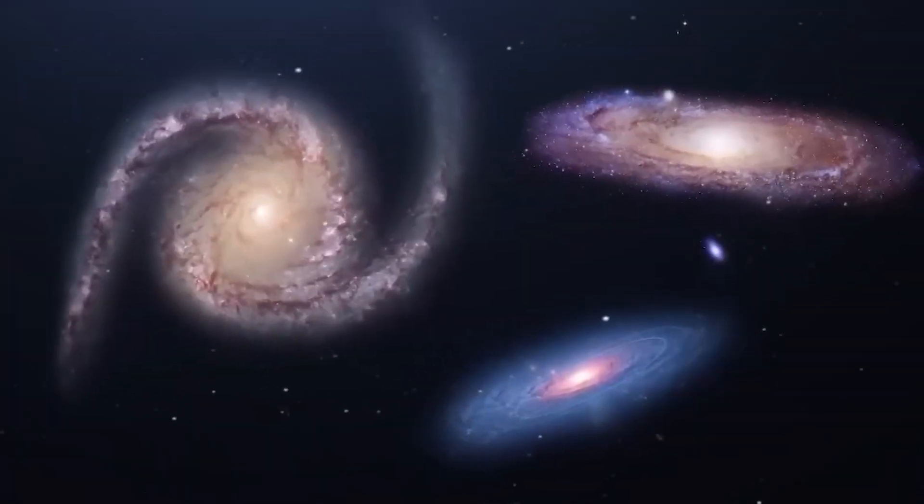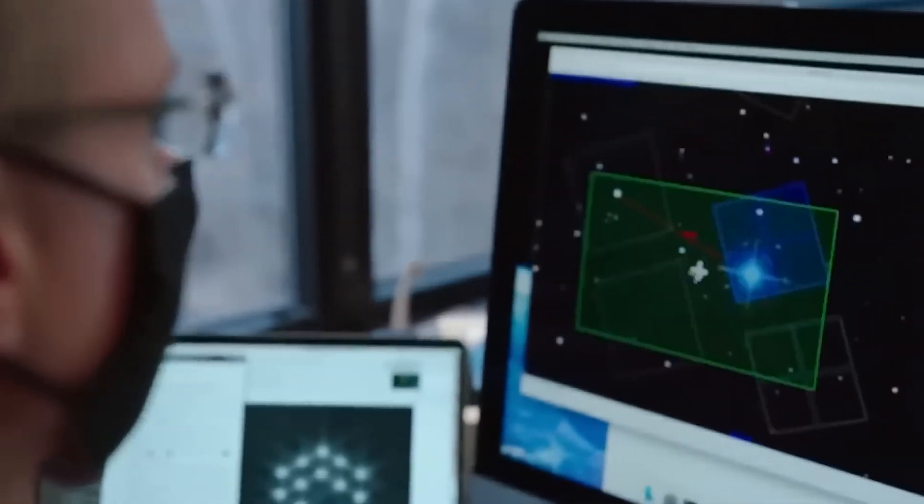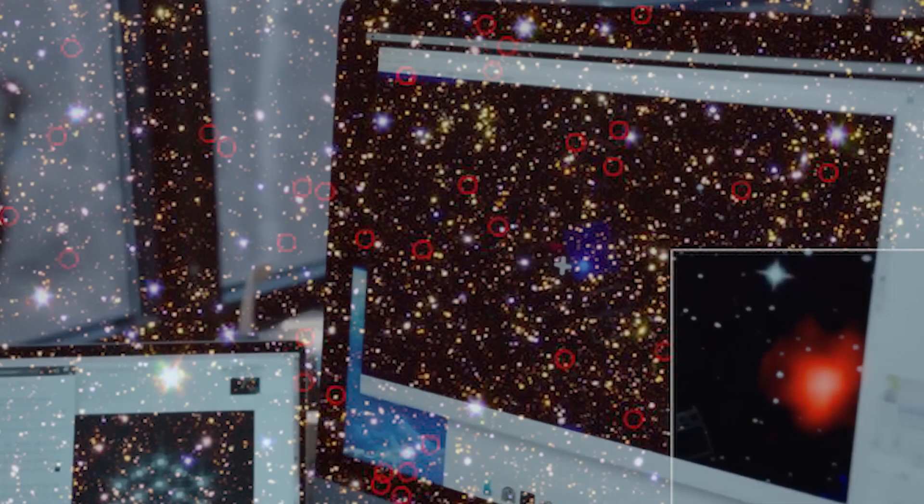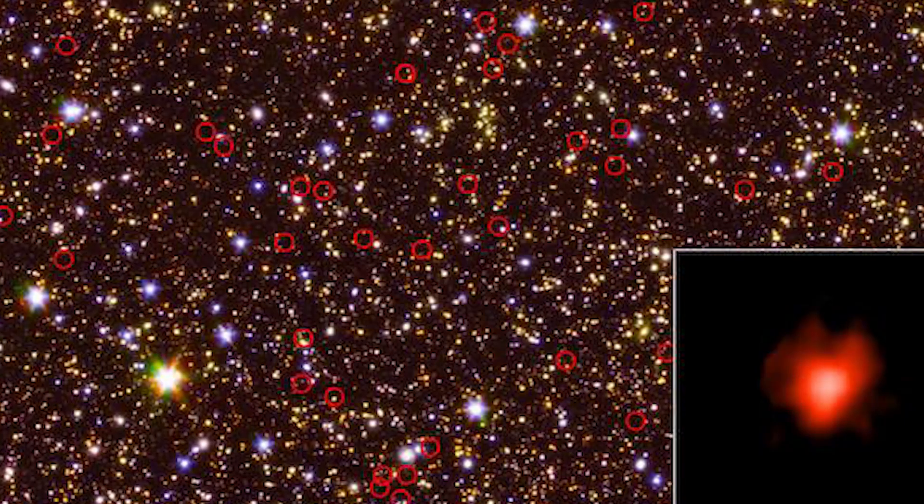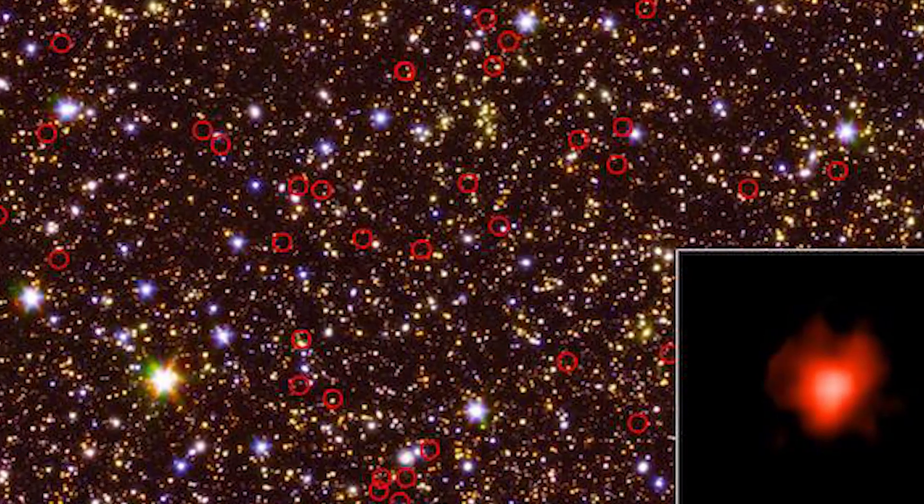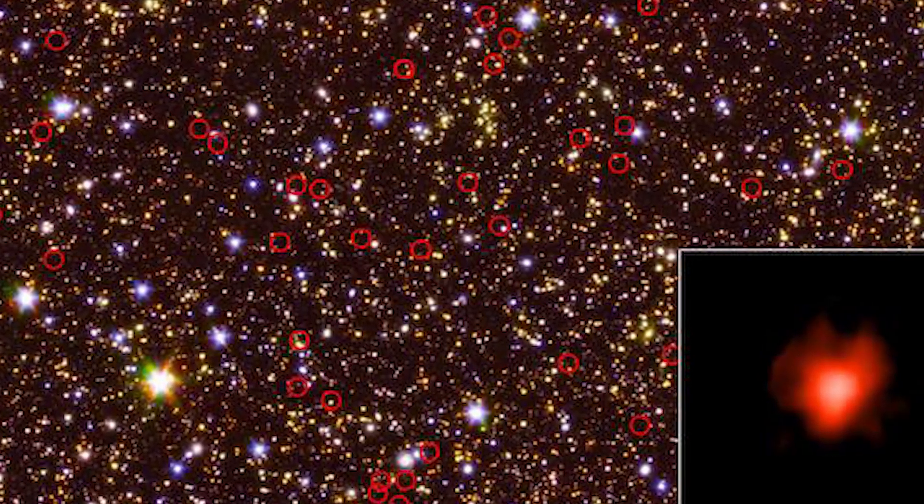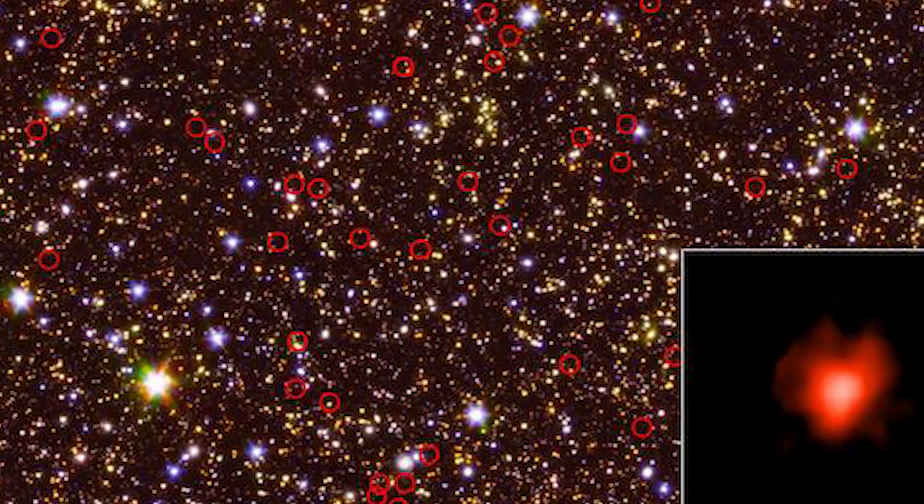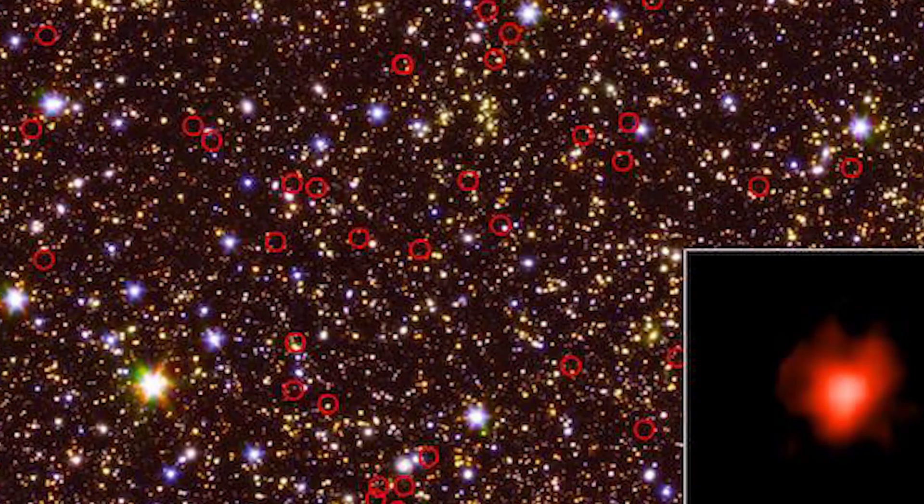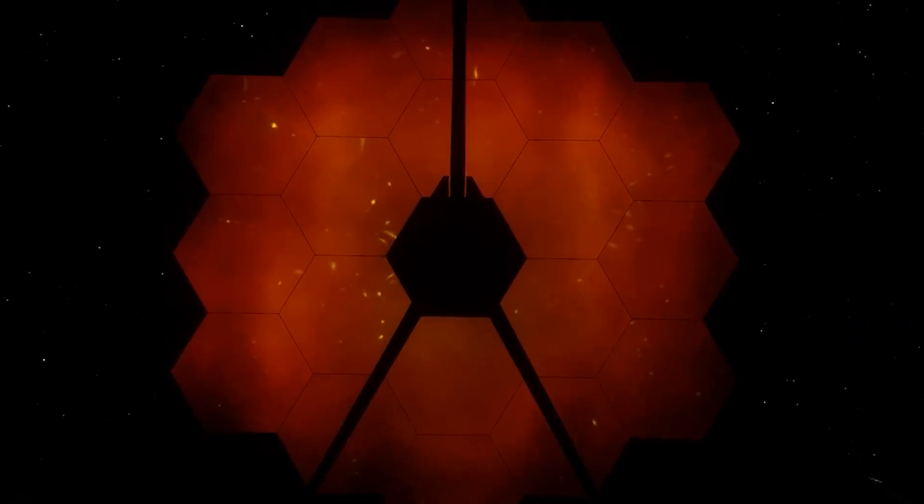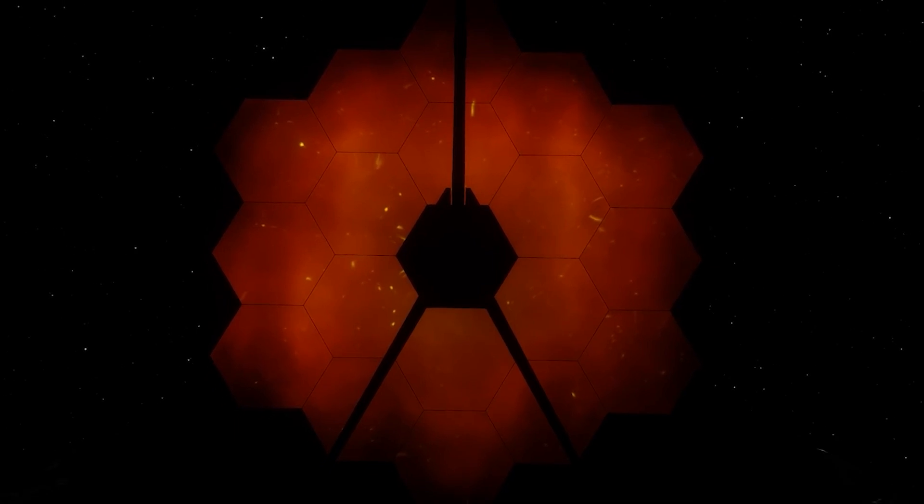Another stunning discovery stumped scientists when researchers found the primordial galaxies at the edge of the universe. They were skeptical about their authenticity. Some thought they might be nearby galaxies in disguise, so they shared the data with other scientists around the world hoping for the best. Amazingly, the James Webb Space Telescope confirmed that these ancient galaxies are real.